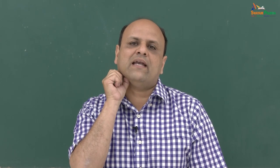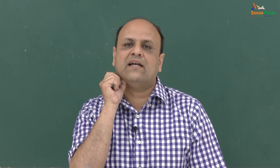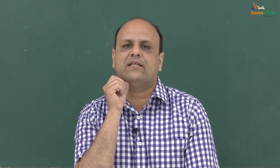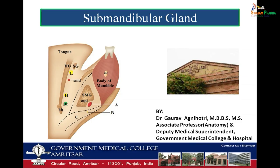Their names indicate their position. Parotid means around the ear, so the parotid gland is located in relation to the ear. Submandibular is related to the mandible — as the name indicates, it is underneath the mandible. The third is the sublingual — as the name indicates, below the tongue. This almond-shaped sublingual gland is present below the tongue in the anterior part. The three salivary glands are responsible for the saliva in our mouth, keeping the mouth wet. Today we are going to go through the gross anatomy of the submandibular salivary gland and its associated clinical manifestations.